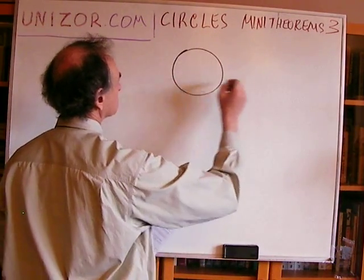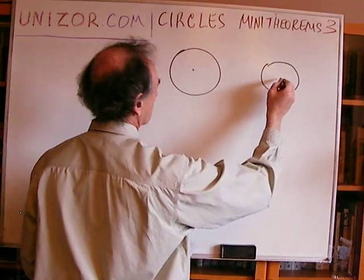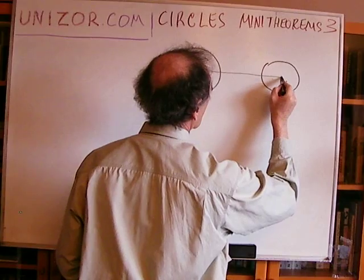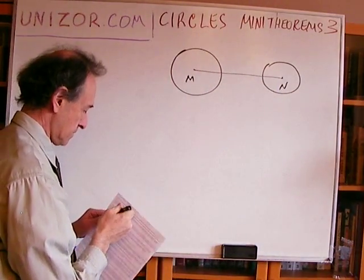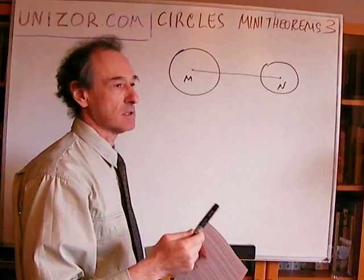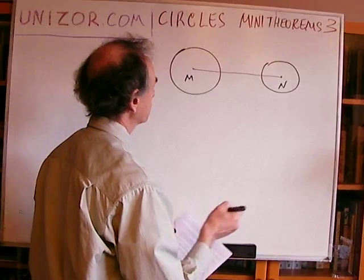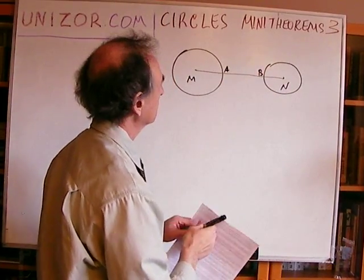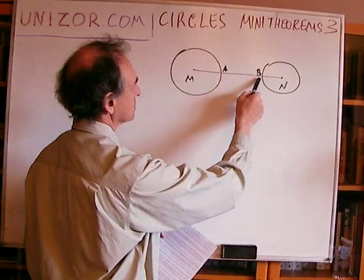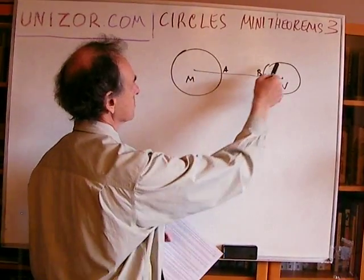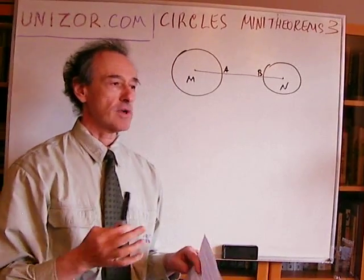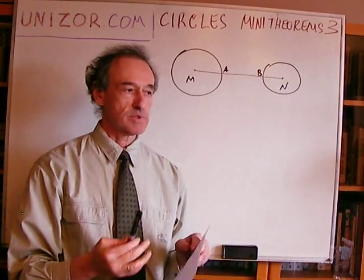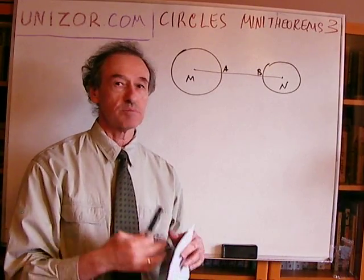You have two circles outside of each other. These are centers M and N. What I am trying to prove is that the shortest distance between these two circles is this particular segment, obtained by connecting the centers — these are intersections of this center line with both circles. Before addressing this problem, I would like to say a couple of words about the terminology: distance between circles.